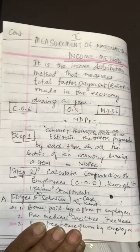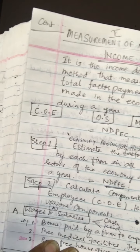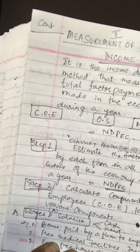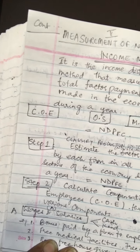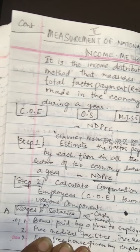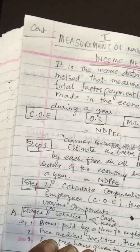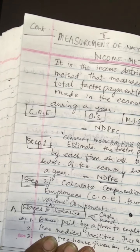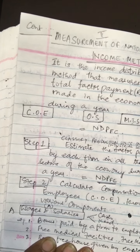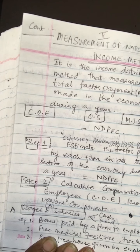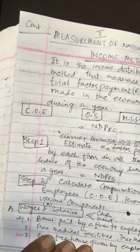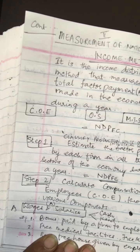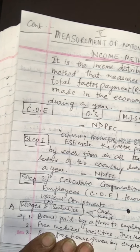Compensation of employees is defined as the total remuneration in cash, in kind, and in the form of social security contributions by employers, payable by an enterprise to employees in return for work done during an accounting period. Its two components are wages and salaries — which have cash and kind parts. Cash wages include daily, weekly, or monthly payments including allowances such as house rent, conveyance, travel, bonus, commissions, and tips. Wages in kind are goods and services provided by employers to employees for the satisfaction of their wants.